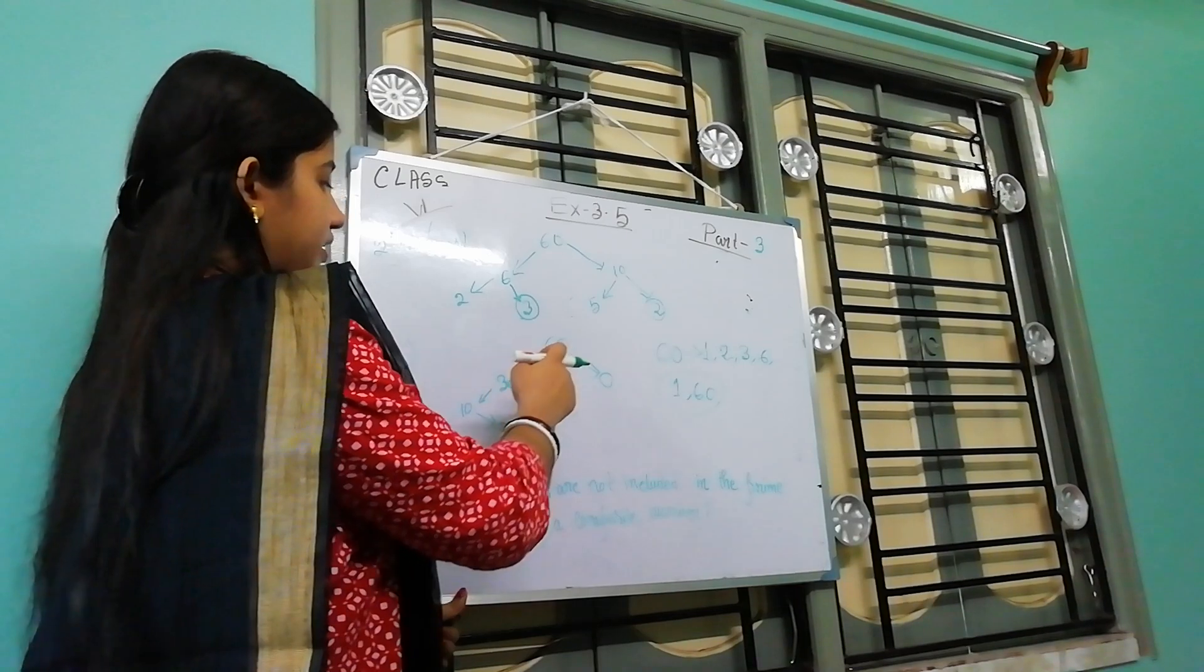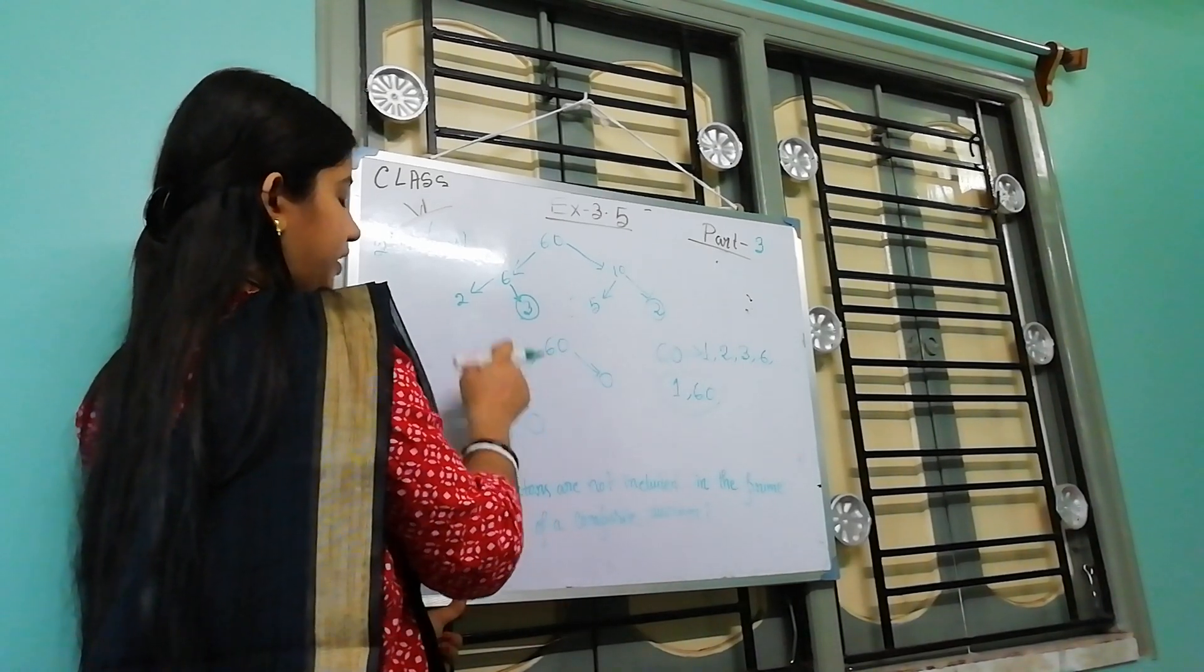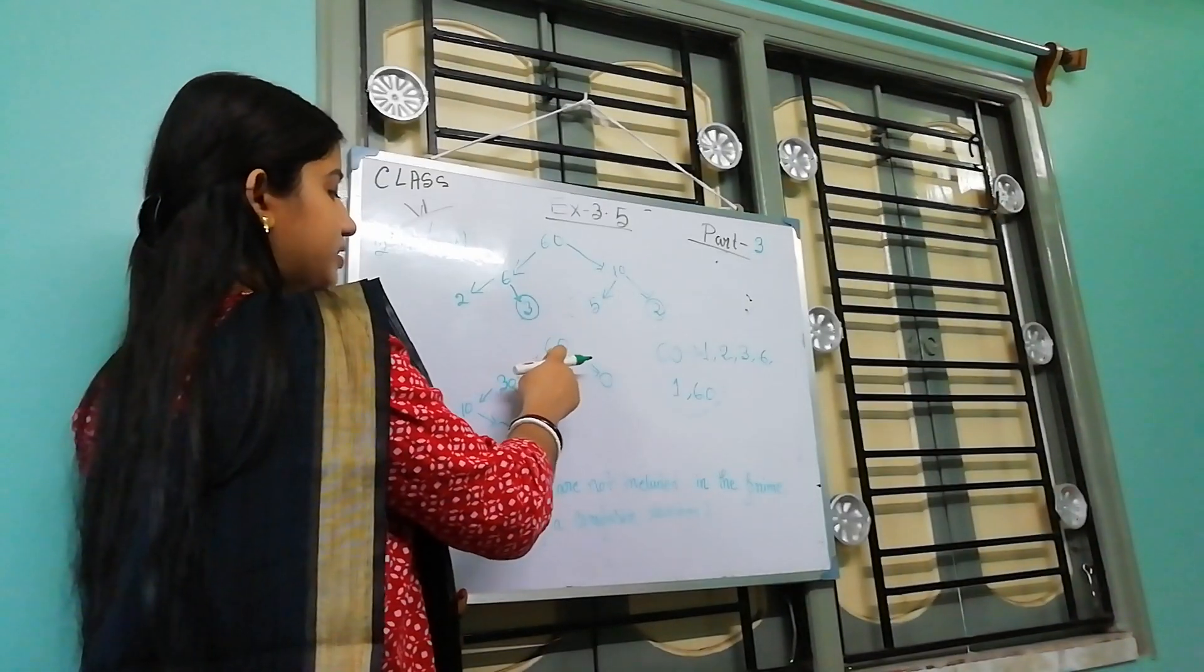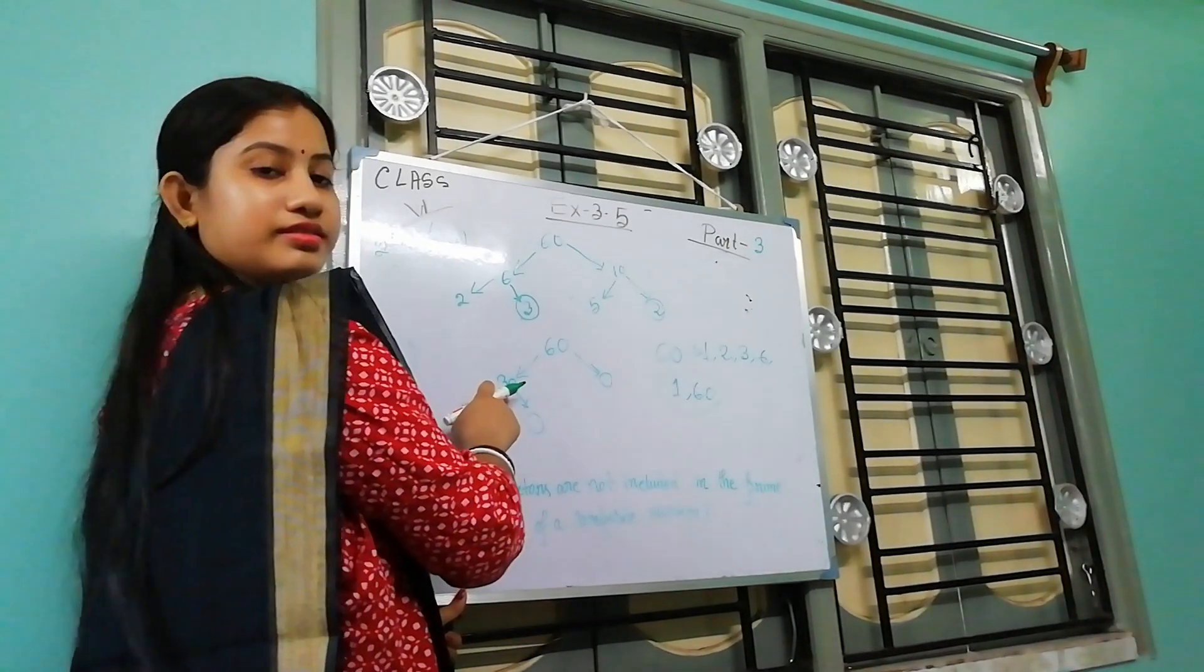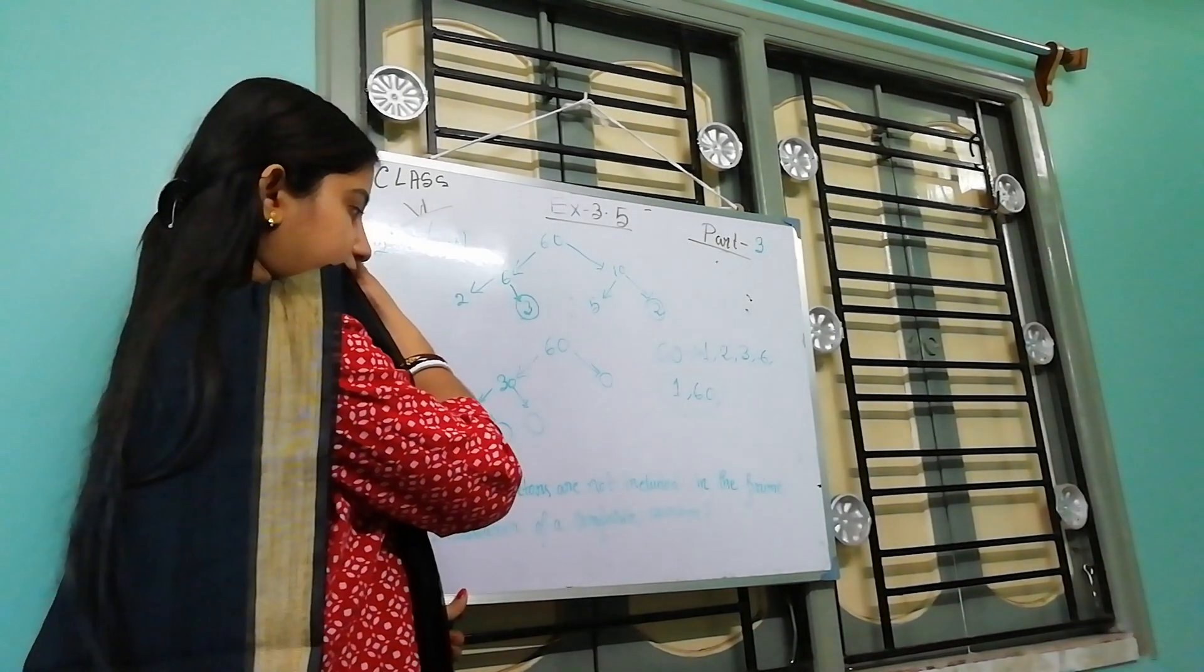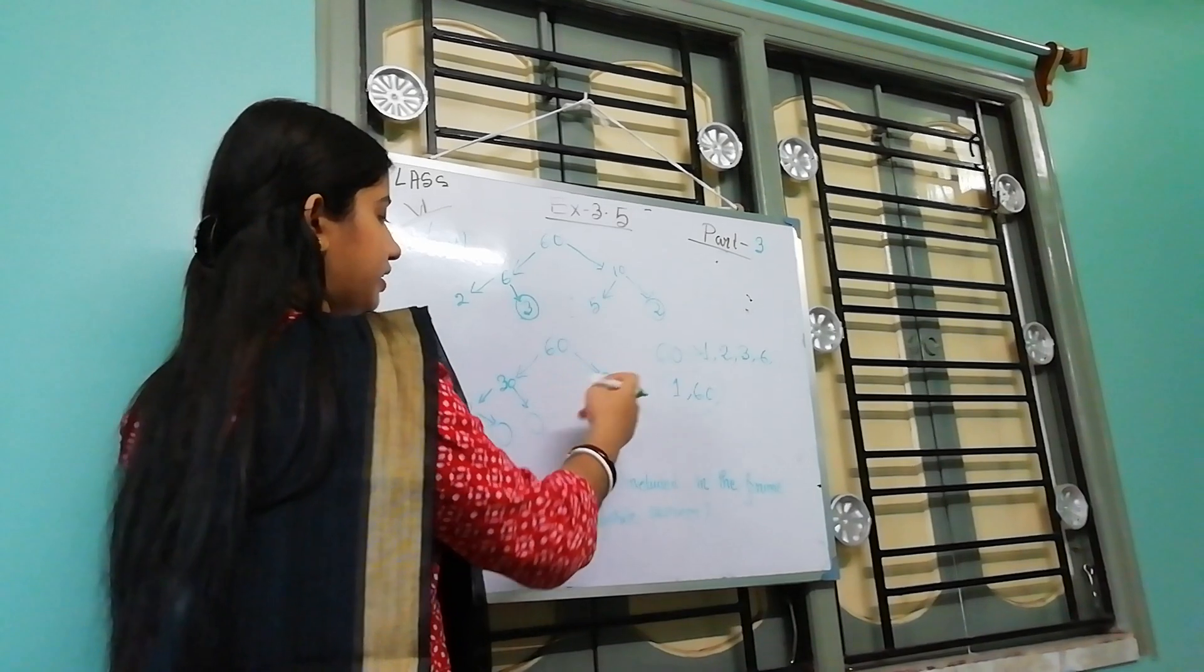And number D, this is 60 prime factor, factor of 60. 30, this is a factor of 60. And another factor.